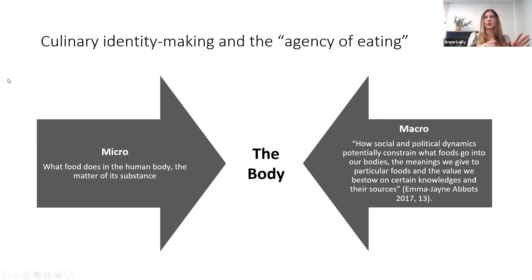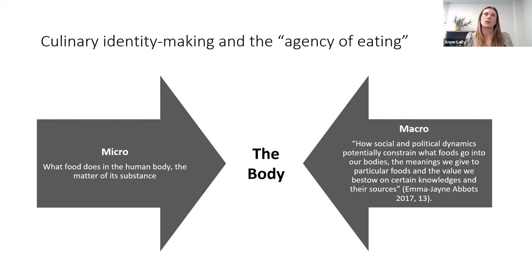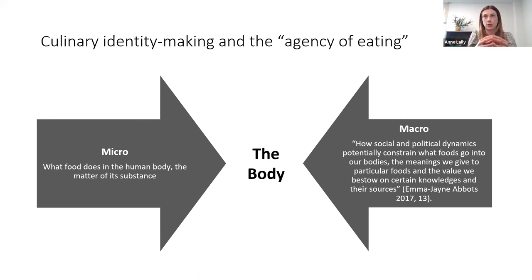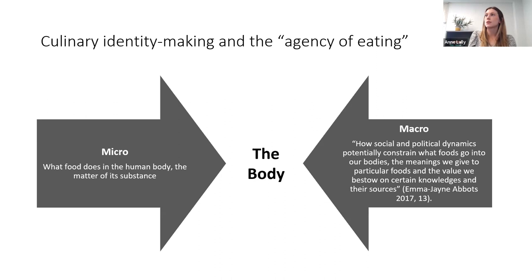To begin, I'll touch on some theory guiding our thinking: the idea of culinary identity-making and the agency of eating. Thinking about the micro and macro dimensions of food — the micro being what food does in the human body, the nutritive benefits, how we take building blocks of what we consume to create our own bodies. The macro being how social and political dynamics potentially constrain what foods go into our bodies, the meanings we give to particular foods, and the value we bestow on certain knowledges and their sources. This is pulled from Emma Jane Abbott's work, 'The Agency of Eating.'